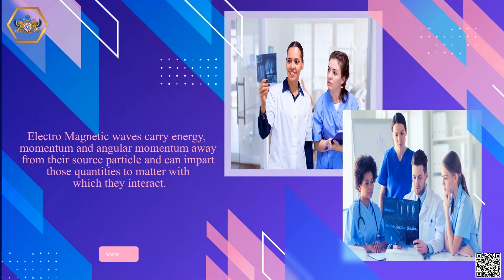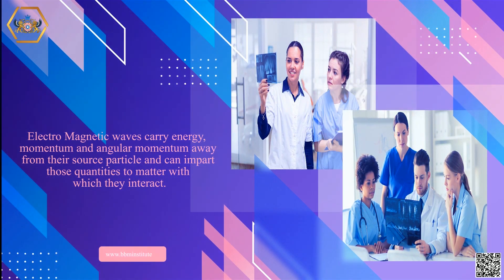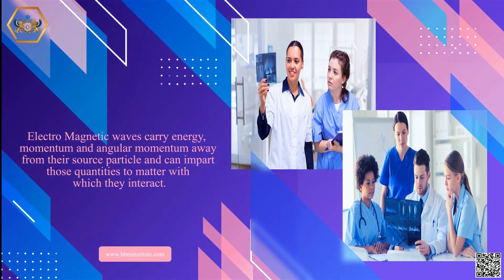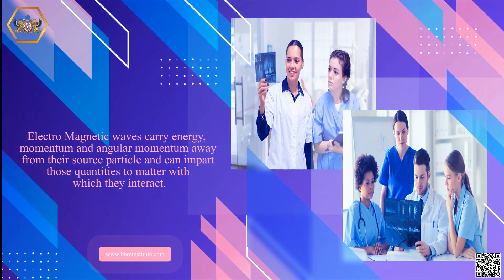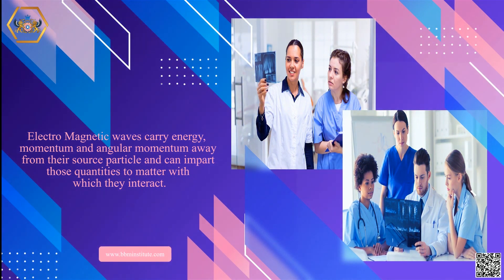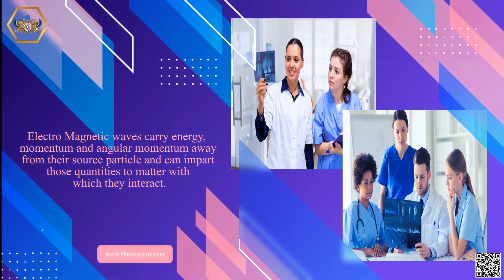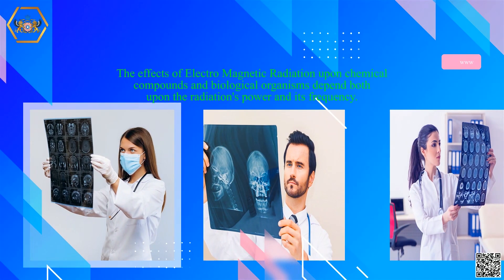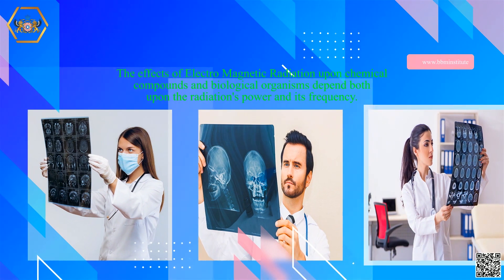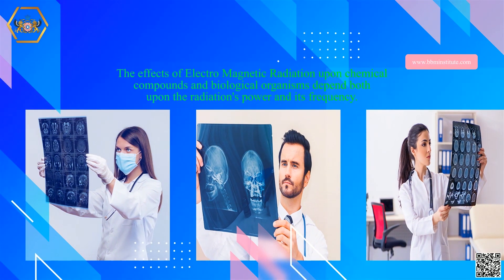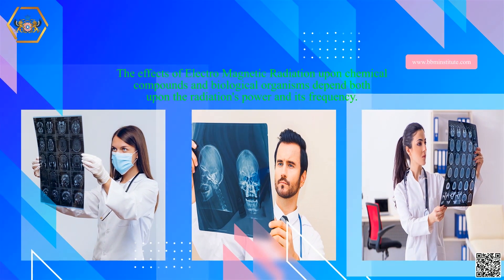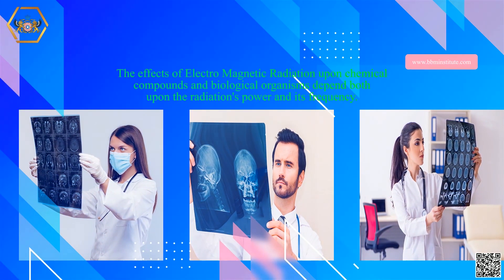Electromagnetic waves carry energy, momentum and angular momentum away from their source particle and can impart those quantities to matter with which they interact. The effects of electromagnetic radiation upon chemical compounds and biological organisms depend both upon the radiation's power and its frequency.